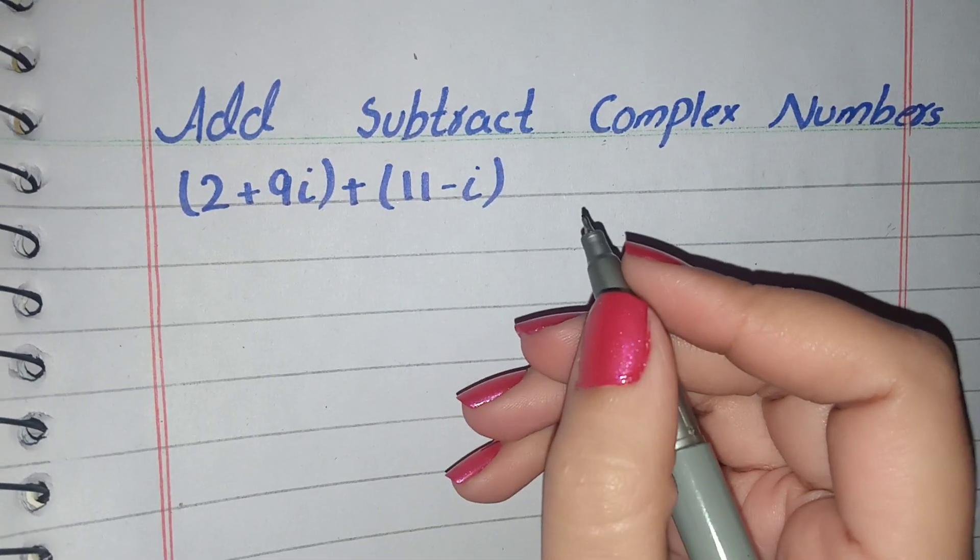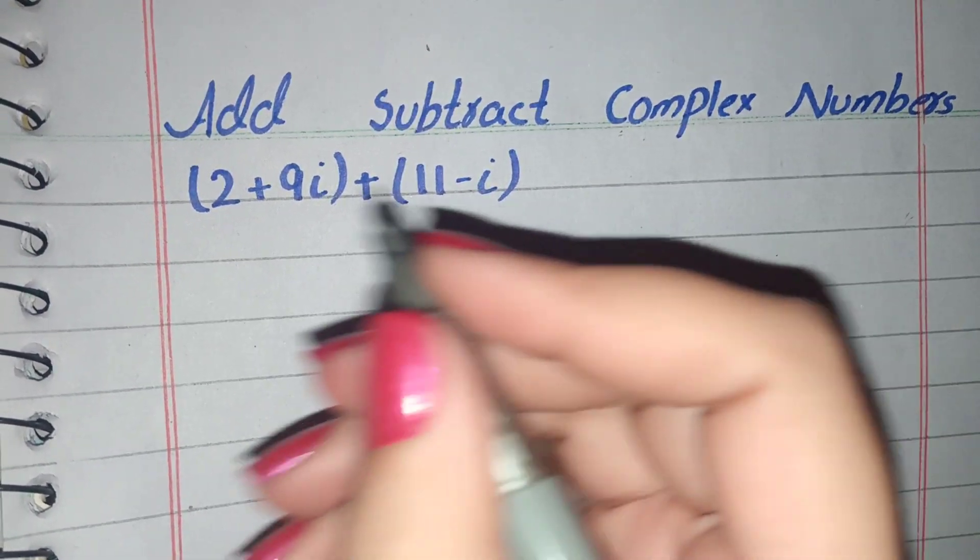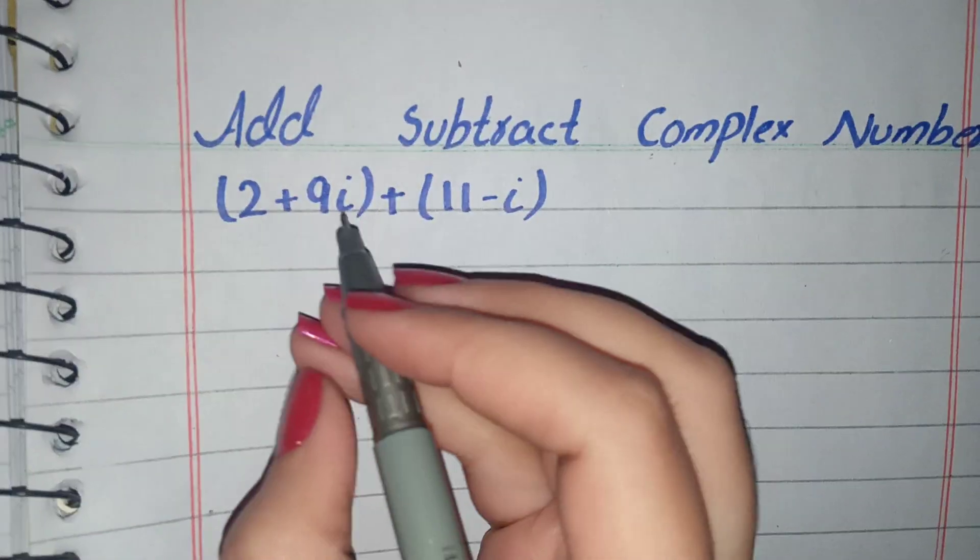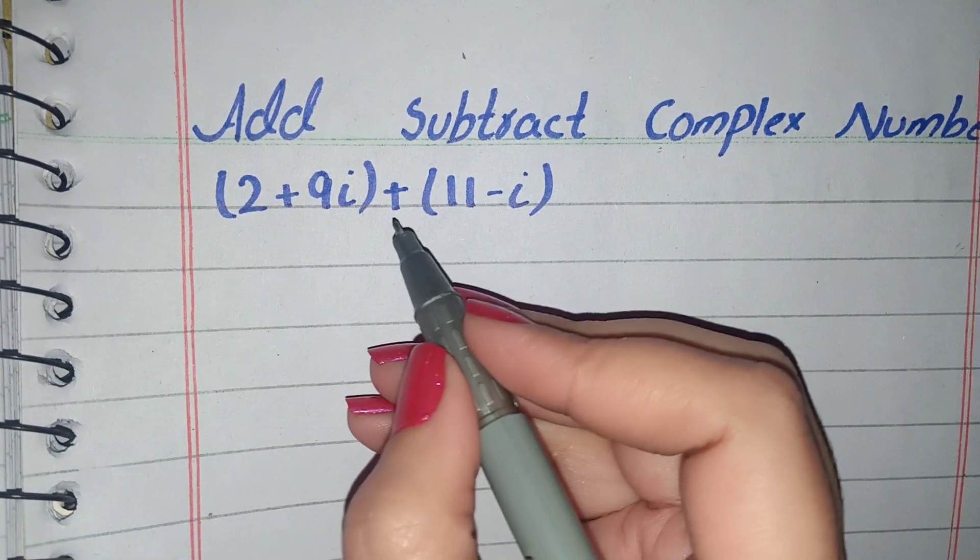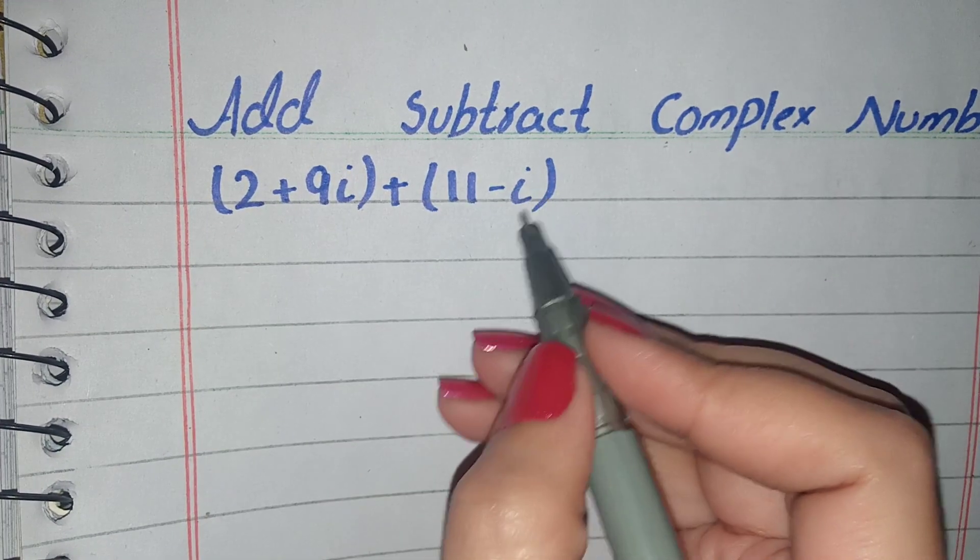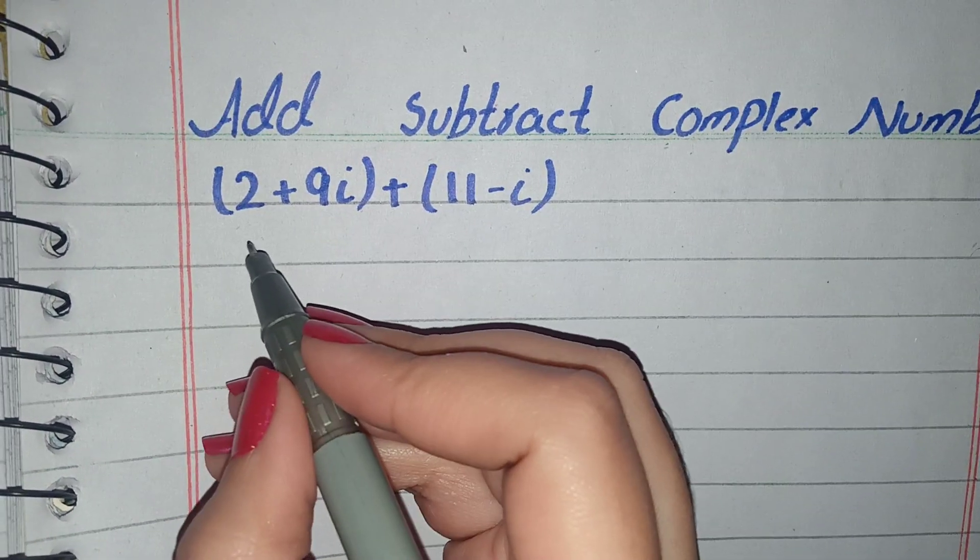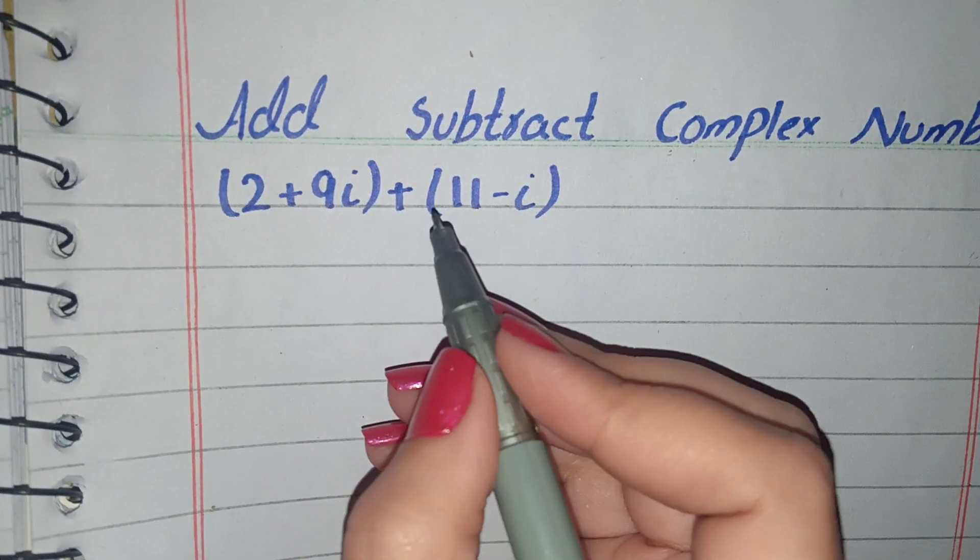Welcome to my class channel. In this video we will solve this question statement: add or subtract complex numbers. We have 2 plus 9i in one bracket and in another bracket we have 11 minus i.